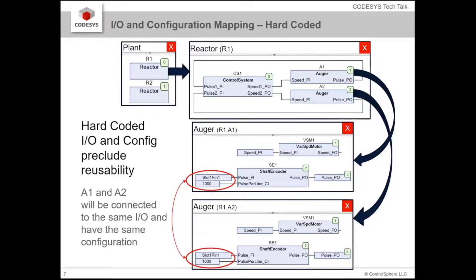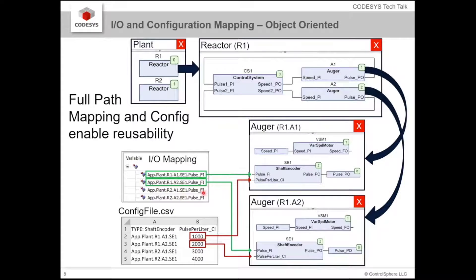So how do we fix that? CodeSys has a really great technique for handling the IO — it was genius the way they came up with this. Instead of mapping your IO to a global variable like we always have in the past, you map it using a full path name. So here we have the plant, the R1 reactor, the A1 auger, and the SE1 shaft encoder. We map this to app.plant.r1.a1.se1.pulsefi — that input. That IO point has been mapped to that instance. We do the same for A2, and for the second reactor R2. Now the centralized IO points are mapped out to all these distributed objects.